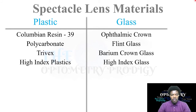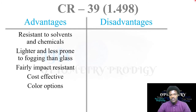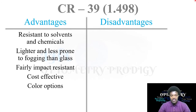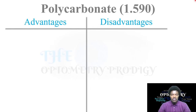CR39 has a refractive index of 1.498. The advantages are: resistant to solvents and chemicals, lighter and less prone to fogging than glass, fairly impact resistant, cost effective, and has a range of colour options as it can be tinted easily. The disadvantages are: it is thicker than glass, easy to scratch, and the optics of CR39 are actually inferior to glass.